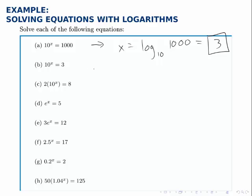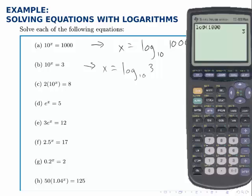The second example works just the same way. We rewrite this exponential equation as a logarithmic equation. The base of the exponent becomes the base of the log. And now we need to evaluate log base 10 of three. Again, using the calculator, we type in log of three, and find that the answer is 0.477 if we round to three decimal places.